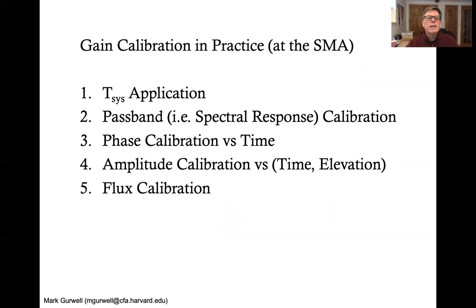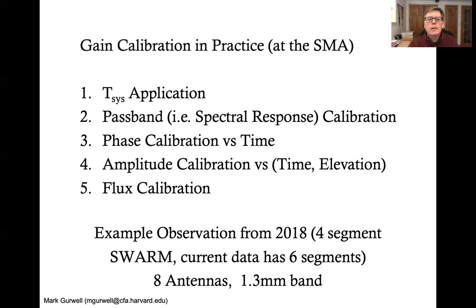So gain calibration in practice, and in particular at the SMA, involves several steps. And there are other things beyond these steps that are often needed to be taken care of, but these are the basic ones. If you have a data set from an array that has the positions of the antennas known in advance and has certain other calibrations done in advance, this is typical. They include the TSYS calibration, the passband or spectral response calibration, you want to do phase calibration with time, and then amplitude calibration, which is often a function of time but also could be a function of say elevation or azimuth in addition to time, and then flex calibration. And at the end of that, you would have a fully calibrated data set.